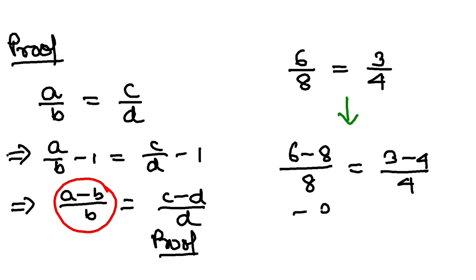So, -2/8 equals -1/4, right. That is an example of dividendo and how you are going to apply this in real questions. In the next video, we shall be learning the fifth property, that is convertendo.